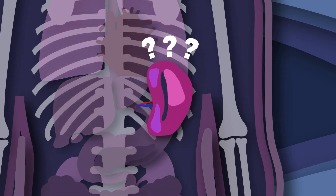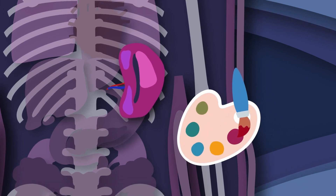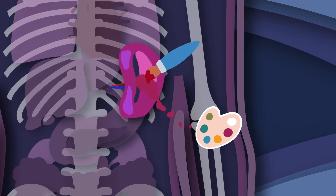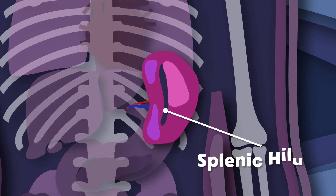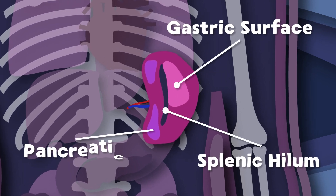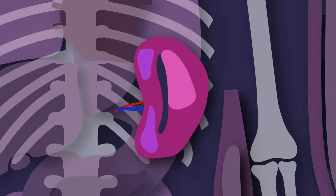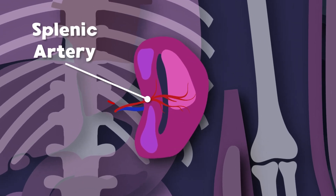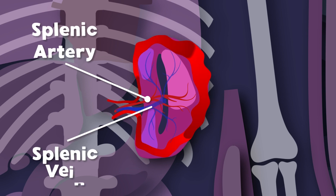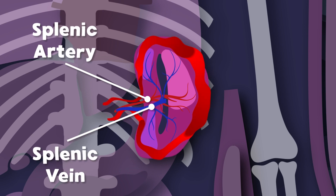What's the anatomy of the spleen? The spleen's parts I will teach you now while you look at the splenic work of art. Here you see the splenic hilum and the gastric surface. There's the pancreatic and renal surface. The splenic artery supplies oxygenated blood to the spleen, and the splenic vein drains the blood from the spleen.